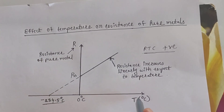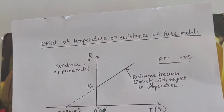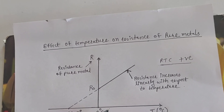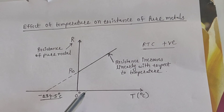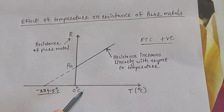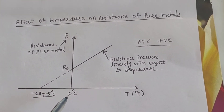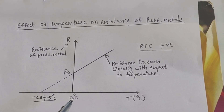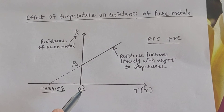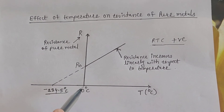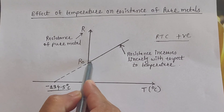Why does resistance increase with temperature? At low temperature, electrons are almost stationary. When temperature is increased, heat is developed, and due to that heat, electrons start oscillating in random directions. They collide with each other, producing opposition to the flow of electrons, so resistance increases.